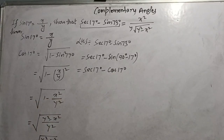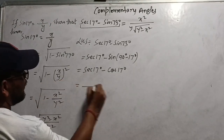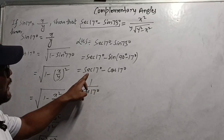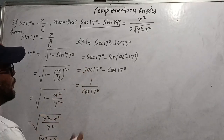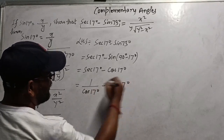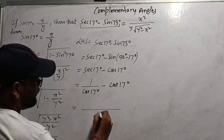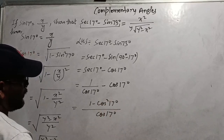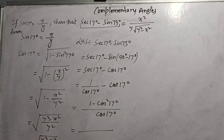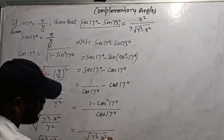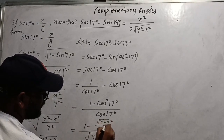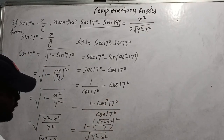We don't have the value of sec17° directly, so convert using sec θ = 1/cos θ. So sec17° = 1/cos17° = y/√(y² - x²). Now find the LCM of sec17° - sin73°, substituting the values of cos17°.